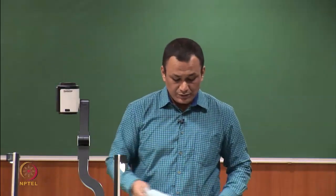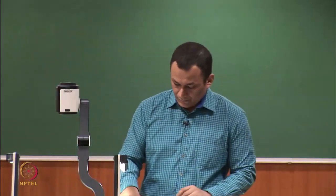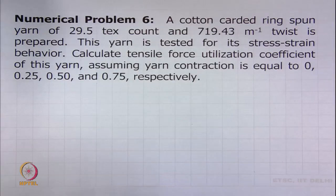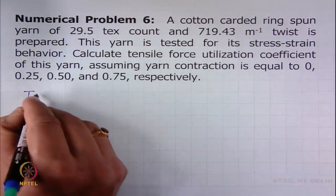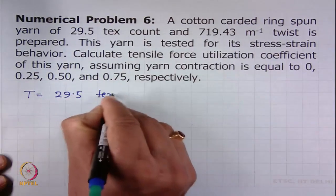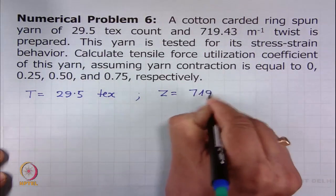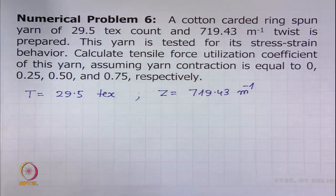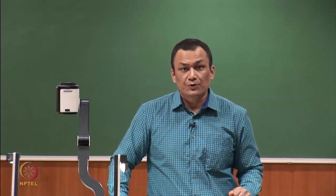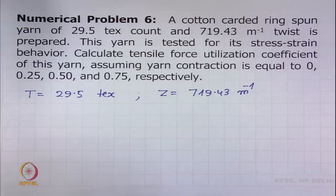We have solved numerical problem 5. Now we are going to solve numerical problem 6 of this module. A cotton carded ring spun yarn of 29.5 tex count and 719.43 meter inverse twist is tested for its stress-strain behavior. Calculate the tensile force utilization coefficient phi for contraction ratios eta equal to 0, 0.25, 0.50, and 0.75 respectively.